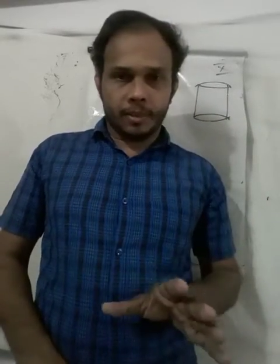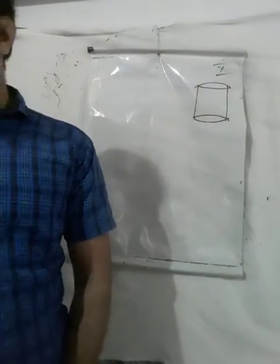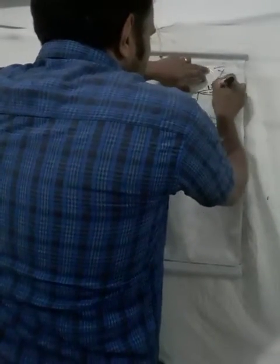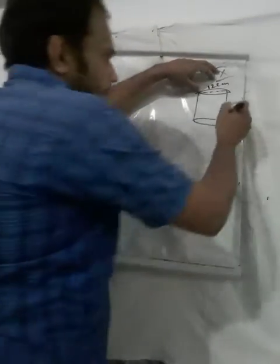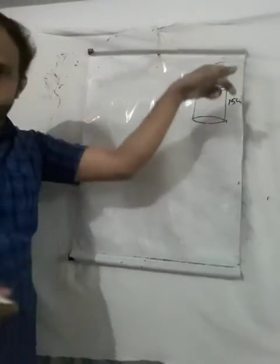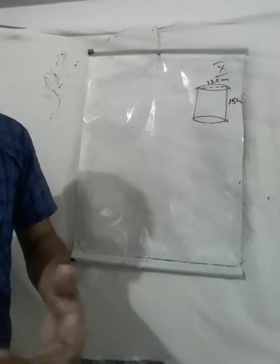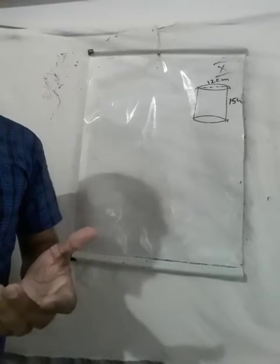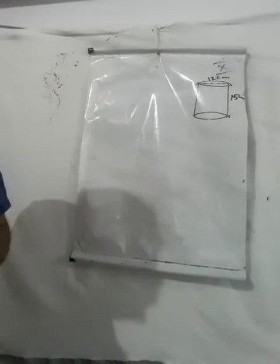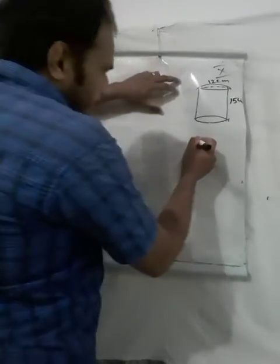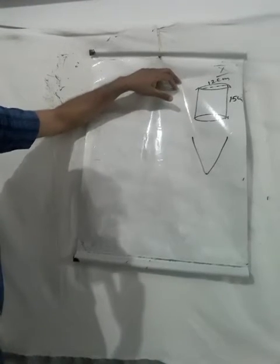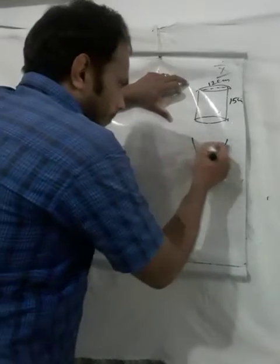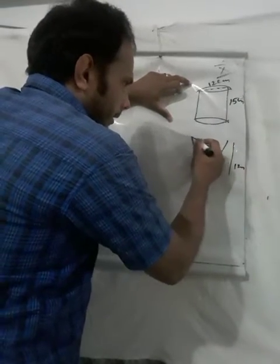The volume of a cylinder is π r² h. The diameter is 12 cm, so the radius is 6 cm, and the height is 15 cm. The ice cream is to be filled into cones of height 12 cm and diameter 6 cm, having a hemispherical shape on top.